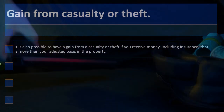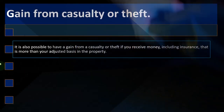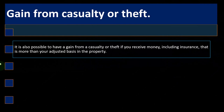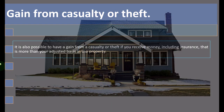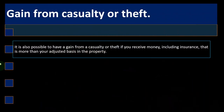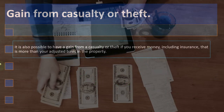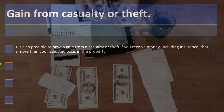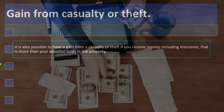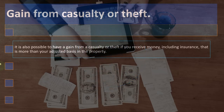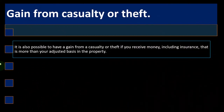It is also possible to have a gain from a casualty or theft if you receive money — including insurance — that is more than your adjusted basis in the property. For example, if your rental property is destroyed and insurance pays you an amount closer to the fair market value, and that amount exceeds your adjusted basis, you effectively have a gain. If you sold the property, it would be the sales price minus the cost basis, and generally you must report this gain.